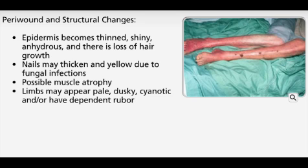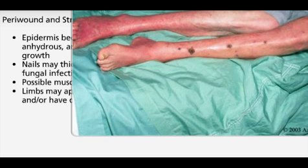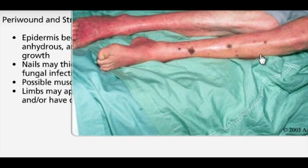Patients with chronic arterial insufficiency ulcers usually show signs of decreased perfusion. When blood supply distal to the occlusion becomes inadequate, many changes occur. The epidermis becomes thinner, shiny, and dry, and there is loss of hair growth. Poor tissue oxygenation increases the risk of fungal infections, making nails yellow, thickened, and brittle. Prolonged severe ischemia may cause muscle atrophy.